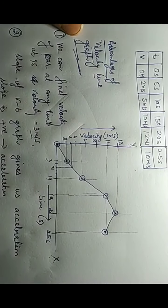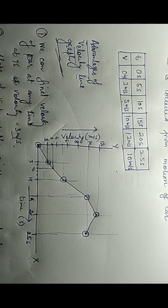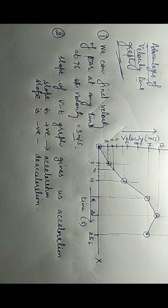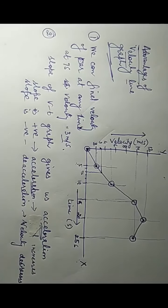From the raw data alone, I cannot easily tell the acceleration — I would need calculations. But from the velocity-time graph, I can instantly see where the acceleration is maximum, minimum, or negative.